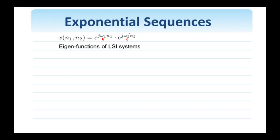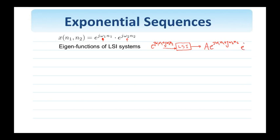Don't worry about the fine details at this point — we'll talk about it later — but what this means is that if I have an LSI system, that is a system that is both linear and spatial invariant, and put at its input a complex exponential like e to the j omega 1 n1 plus j omega 2 n2, then the same complex exponential will appear at the output, simply with a possible change of amplitude A and a possible addition of a phase shift.